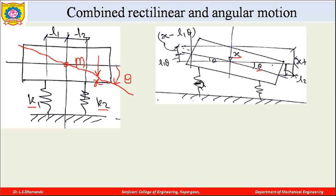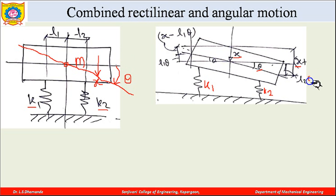The displacement of spring k2: due to downward motion x and due to rotation theta, the total displacement of k2 will be x plus l2·theta. The displacement of spring k1: due to downward motion x and because rotation causes k1's end to move upward, the displacement of k1 will be x minus l1·theta.